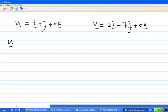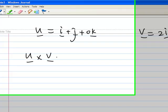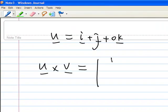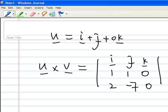So u cross v equals the determinant with i, j, k in the first row, 1, 1, 0 in the second row for components of u, and 2, -7, 0 in the third row for components of v.